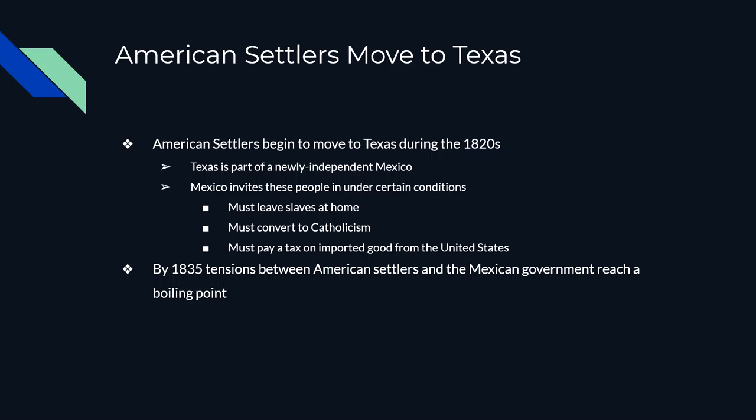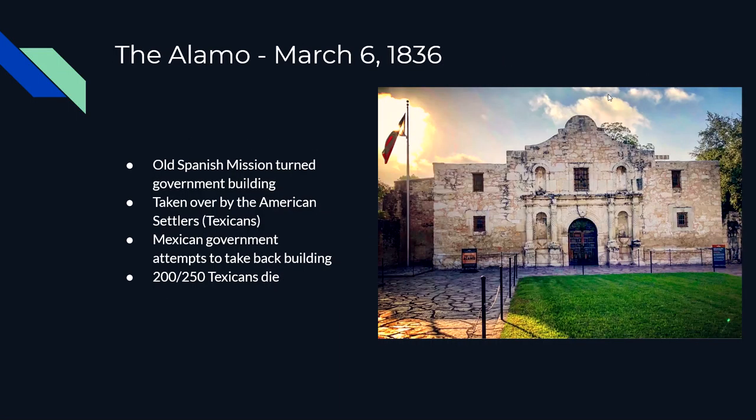Things weren't going well between American settlers in Texas and the Mexican government. By 1835, these tensions had reached a boiling point. On March 6, 1836, the Mexican government had turned an old Catholic mission — the Alamo — into a base of operations to watch the American settlers in Texas, who by this time had taken on the name Texicans. In 1835, the Texicans took over the Alamo and used it for their base of operations. Fighting continued, and eventually on March 6, 1836, the Mexican army surrounded the Alamo and took the building back.